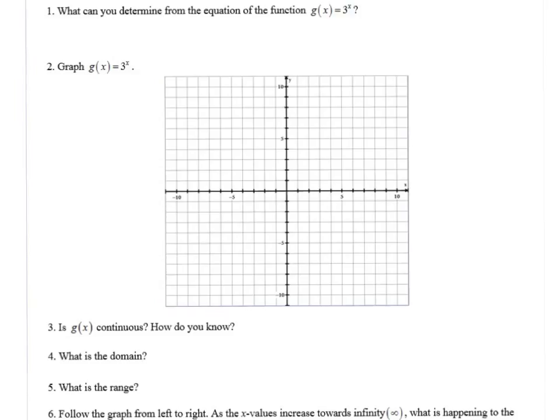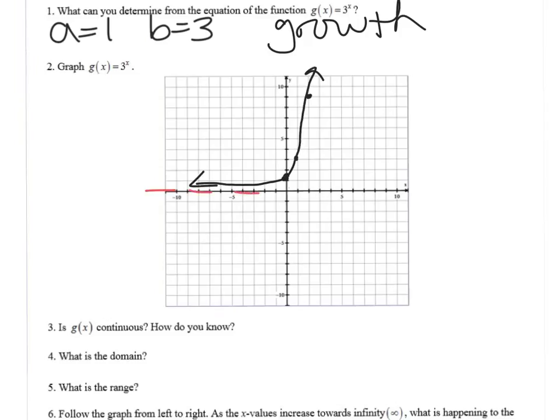So looking at the equation 3 to the x, my a value is 1, and my b value is 3. So this 1 means I'm going to have a y-intercept of 1, and the b value of 3 means it's going to increase or grow, because 3 is more than 1. So let's get some other nice points to plug in here. If I plug in 1, I'm going to get 3, if I plug in 2, I get 9, if I plug in negative 1, I get a third. That's really hard to plot, so then I'll just connect my points, and I get a really nice exponential growth graph, and I can't forget my horizontal asymptote at y equals 0.